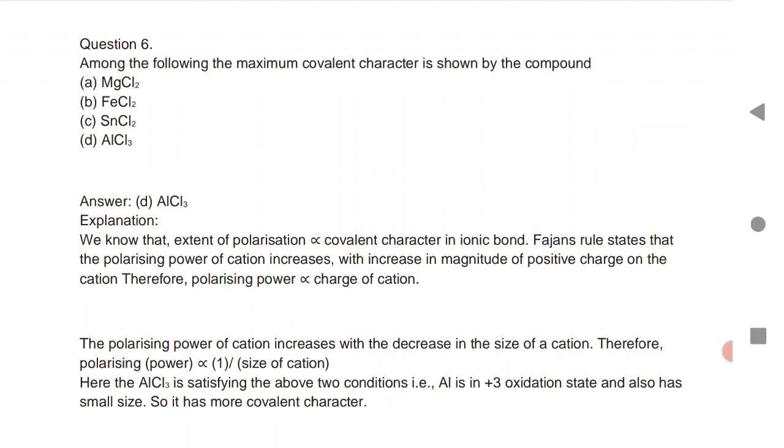Among the following, maximum covalent bond character is shown by AlCl3. It has maximum covalent bond character. We know that extent of polarization is directly proportional to covalent bond in ionic bonds. AlCl3 has maximum covalent character.